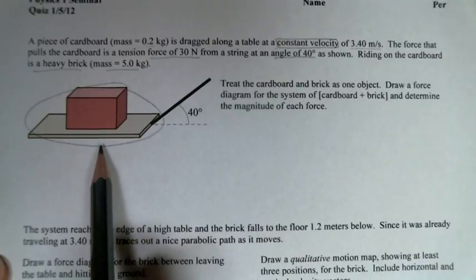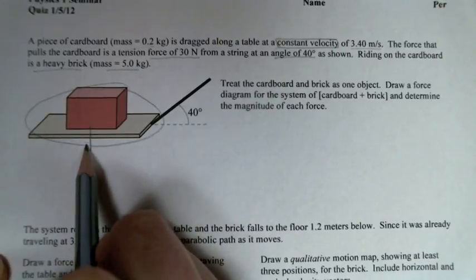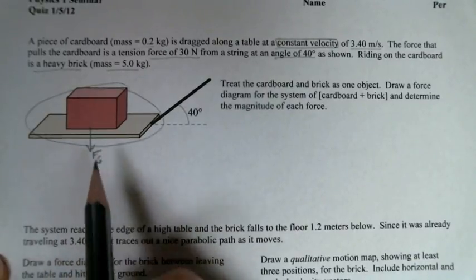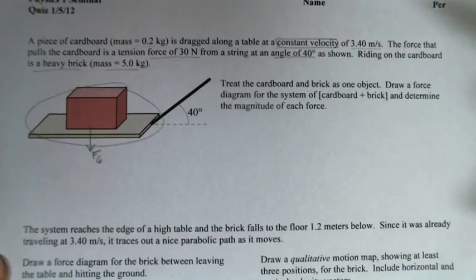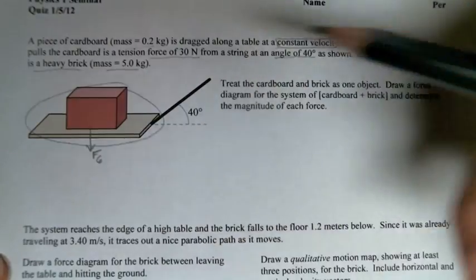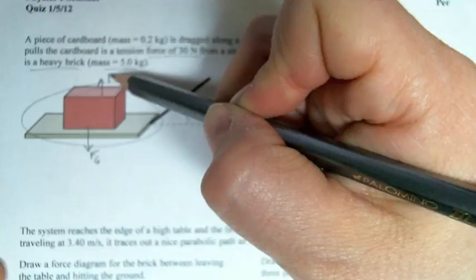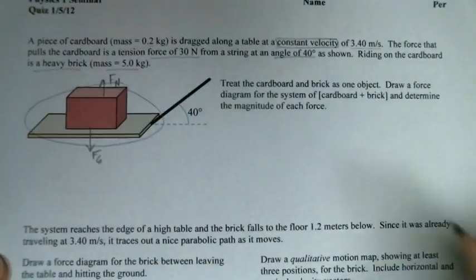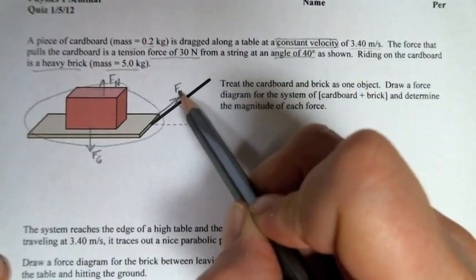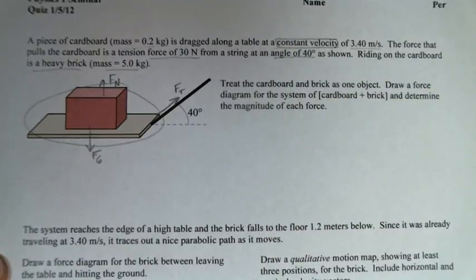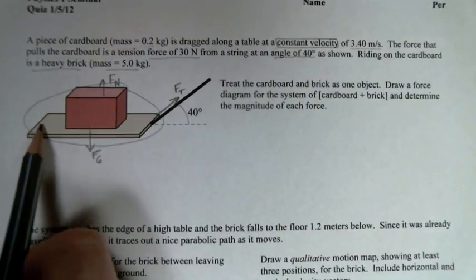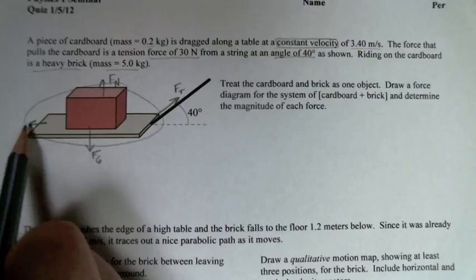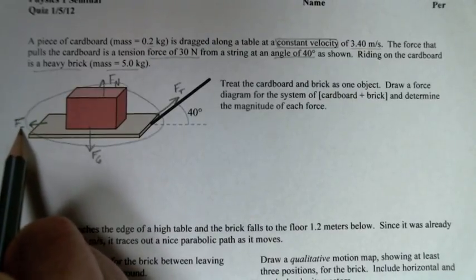First of all, what forces are acting on it? Since we're on Earth, there's going to be a force of gravity. Since this is on a table, along a table, we assume it's flat, there's going to be a normal force. We've got this tension force along the string, and because it's constant velocity, there's going to have to be balanced forces, so we're going to have a friction force going in this direction.